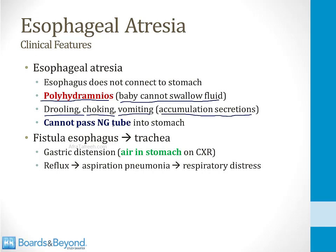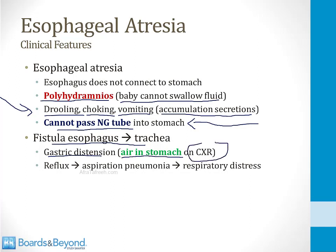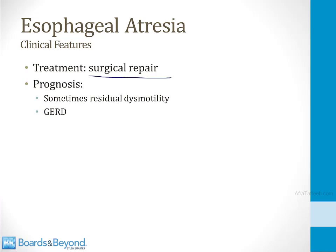To control excess secretions, a nasogastric tube is passed, but in esophageal atresia, it cannot reach the stomach because the esophagus ends in a blind pouch — a characteristic finding. If a tracheoesophageal fistula is present, the baby develops gastric distension as air passes from the trachea into the stomach, visible as excess air on chest X-ray. Babies also develop aspiration pneumonia from reflux of stomach contents, causing respiratory distress. Treatment is surgical repair; prognosis is generally okay, though residual dysmotility and GERD are common.